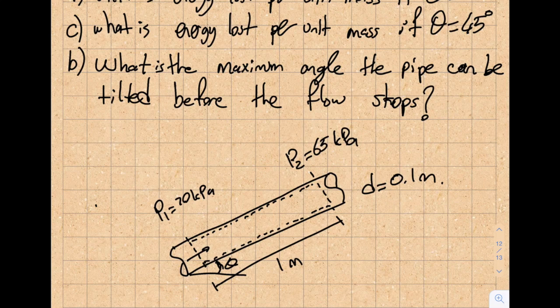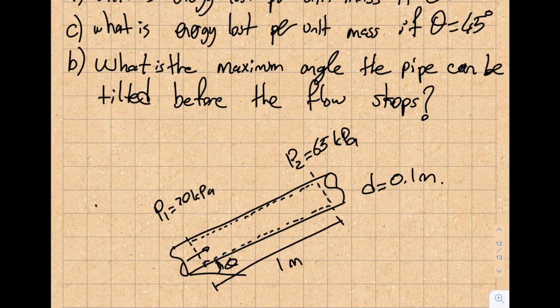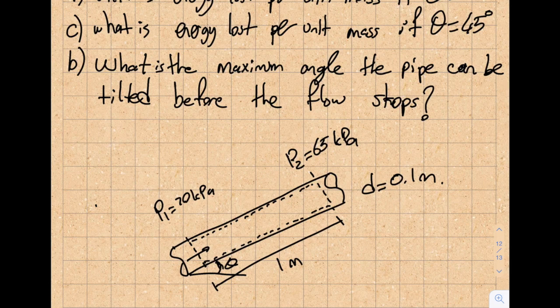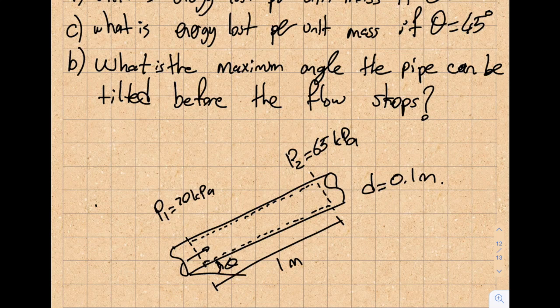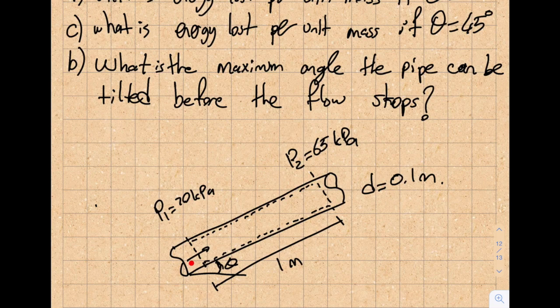If you think about it, the pressure here is 70 kilopascal. This is 65. So if this pipe was horizontal, I will go from here to here, right? Because from high pressure to low pressure. But now there's an angle to it. So it's unpredictable whether my flow is going up. But in this particular case, it gave me that it's going up. So let's start by that and see what happens.